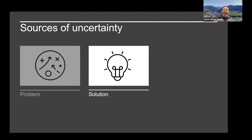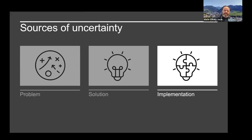The second source of uncertainty is around the solution. Once you know what the problem is, you still have to figure out how to solve it. If we knew the problem and we knew the solution, we wouldn't be doing research — so both of these are really big sources of uncertainty in the research space. The final source: even if you have the problem and solution well defined, figuring out how to implement that solution is also uncertain. Some ideas might work, some might not, some might not be fast enough.